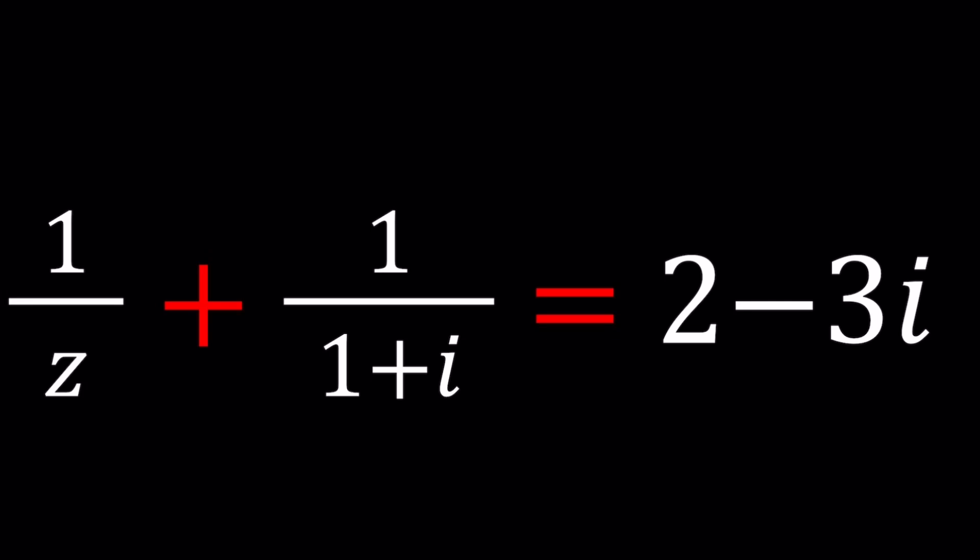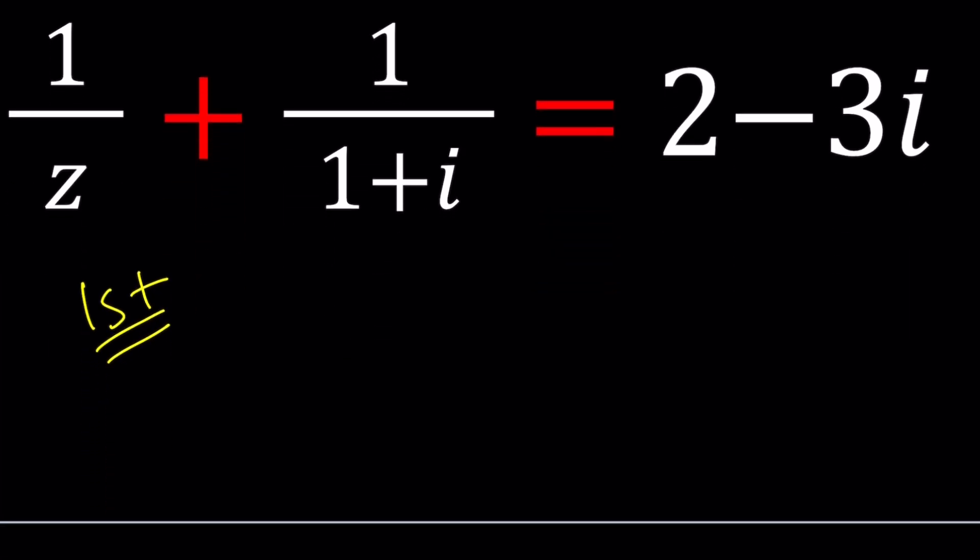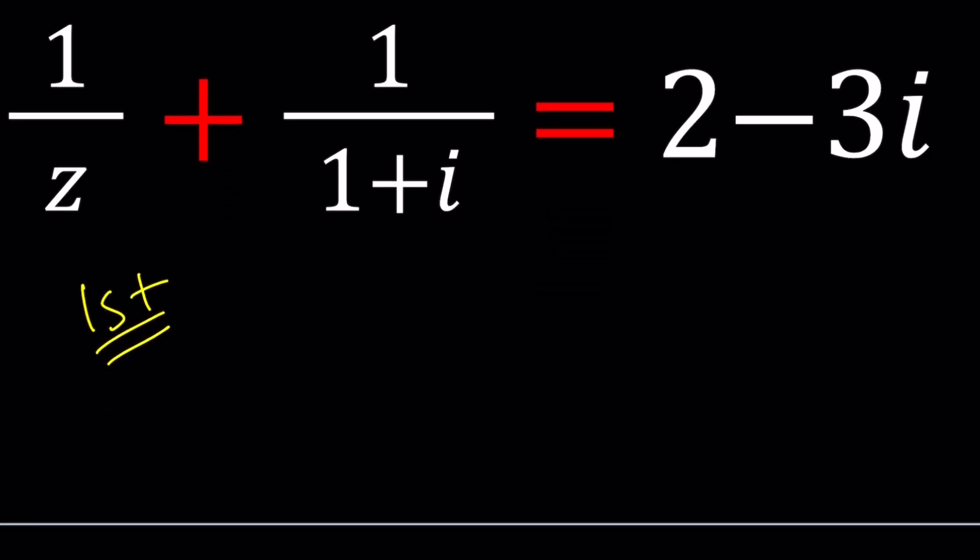I'll be presenting probably two methods and let's start with the first one. So for my first method I'm going to replace Z with A plus BI. Does that make sense? We can write Z in standard form or rectangular form and let's go ahead and plug it in. We're going to get 1 over A plus BI plus 1 over 1 plus I equals 2 minus 3I.